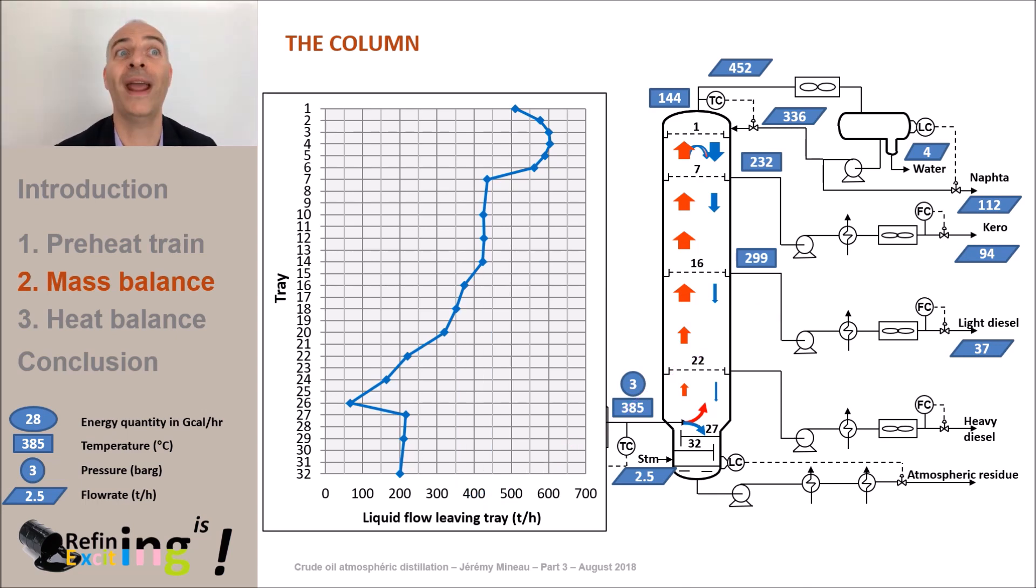Same thing on tray 22, where the heavy diesel will be withdrawn. A flow rate of 56 tons per hour for a cut point of 350 degrees C between heavy diesel and residue is considered. The heavy diesel withdrawal temperature is 330 degrees C.